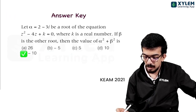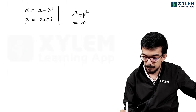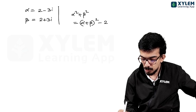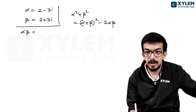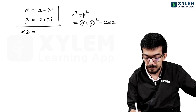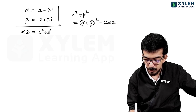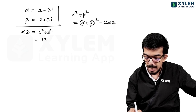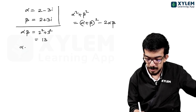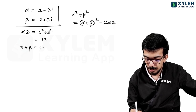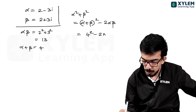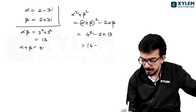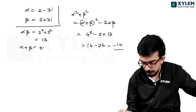Alpha squared plus beta squared equals (alpha + beta)² minus 2·alpha·beta. Alpha plus beta equals 4. Modulus of alpha squared: 2² + 3² = 13, so alpha·beta = 13. Therefore this is 4² minus 2×13 = 16 minus 26, which gives minus 10.